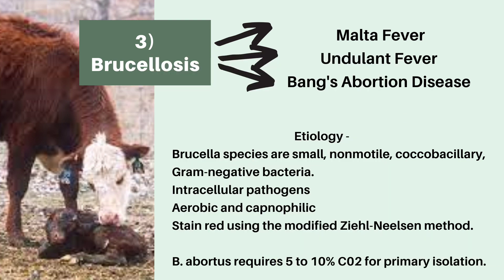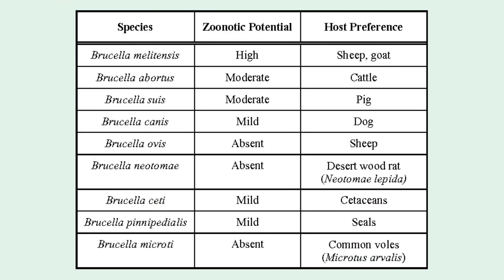The bacteria is aerobic and capnophilic — meaning they thrive well in large concentrations of carbon dioxide. Brucella abortus requires 5–10% carbon dioxide for primary isolation. There is a chart showing various species of Brucella bacteria, their zoonotic potential, and host preference. Brucella melitensis has the highest zoonotic potential of all Brucella species, with preferred hosts being sheep and goat. Brucella abortus has a moderate zoonotic potential with cattle as the host preference.